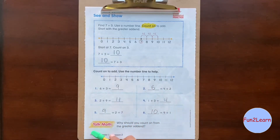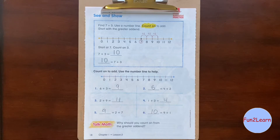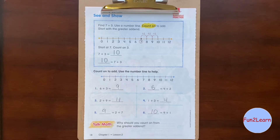Talk math: Why should you count on from the greater addend? The reason why we start at the greater addend is because we count on fewer numbers. If we start at the smaller addend, we will need to count on more.